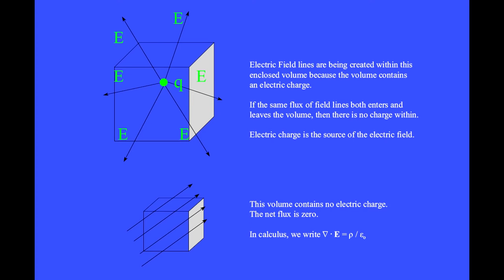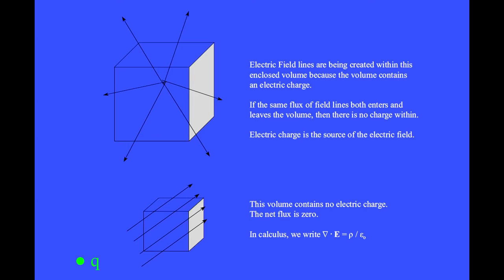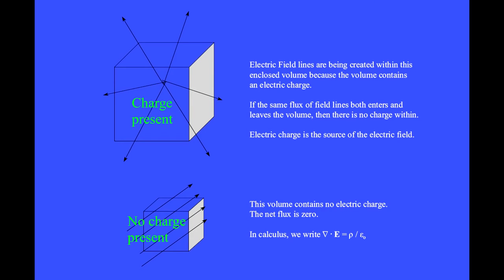Charge Q creates electric field lines passing through the faces of an enclosing box. When the charge is located outside the box, the electric field lines from the charge enter the box but also leave the box. In this case, the net flux through the box is zero because the inward flux is cancelled by the outward flux. We can tell whether or not a box contains a charge by measuring the net flux, which is the amount of flux that exits the box minus the amount that enters.